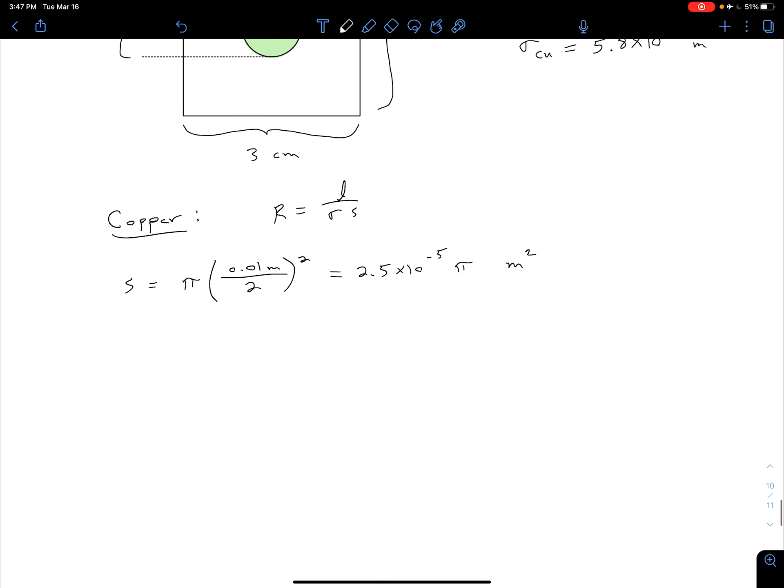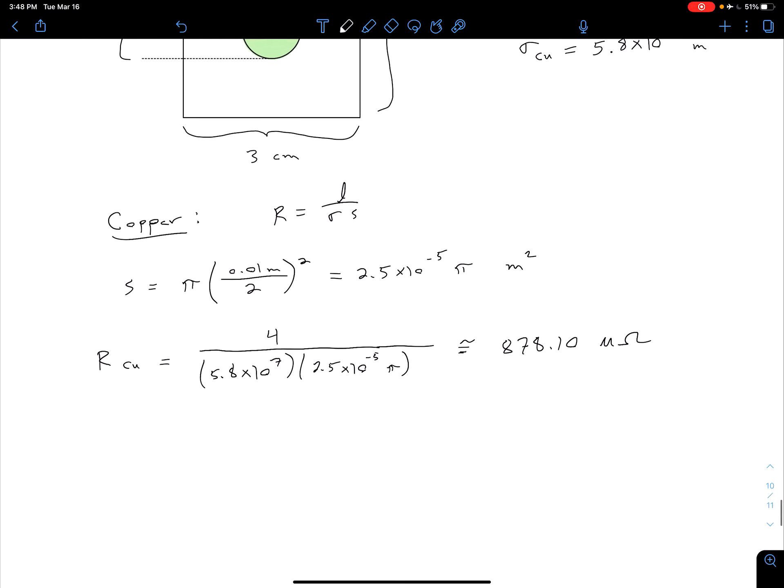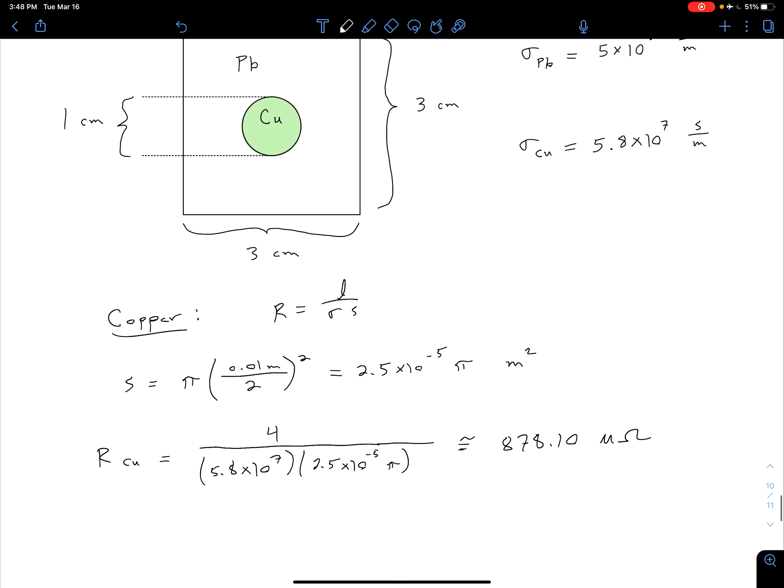Our L is going to be the 4 meters. The resistance of our copper path is going to be 4, that's our 4 meters, divided by our 5.8 times 10 to the 7th Siemens per meter, times our 2.5 times 10 to the minus 5th pi meters squared. That's our cross-sectional area, and we get that that is approximately 878.10 micro-ohms. Notice that's a very small resistance, and that's what we would expect because copper is a very conductive material.